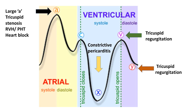A prominent X descent occurs in constrictive pericarditis. What happens is that the heart is surrounded by a thick casing, making it difficult for blood to enter the heart due to the high pressure from the thick pericardium. The only point where blood rushes rapidly into the right atrium is when the ventricle becomes smaller during ventricular systole. When the ventricle size decreases, blood suddenly gushes from the internal jugular vein into the right atrium, causing a prominent X descent in constrictive pericarditis.